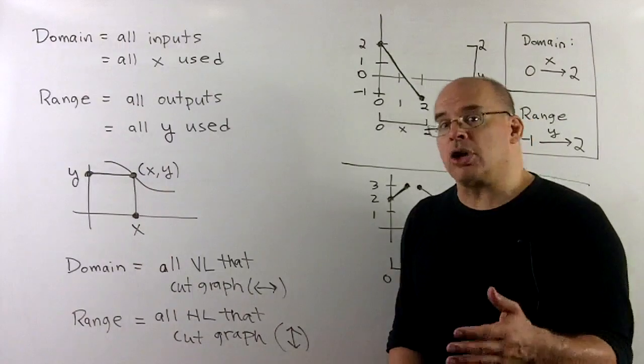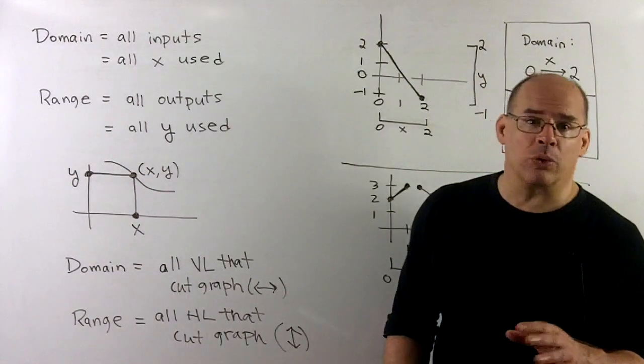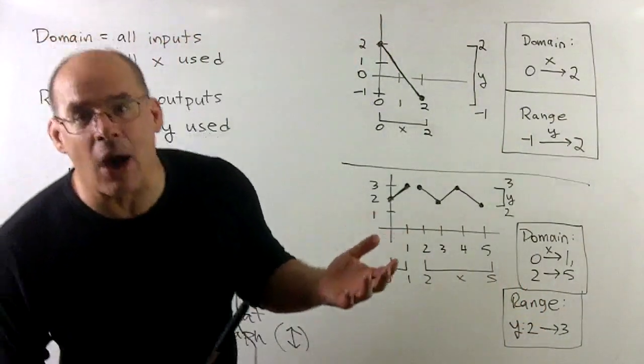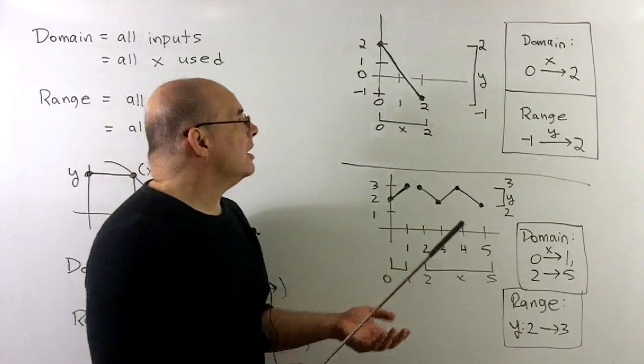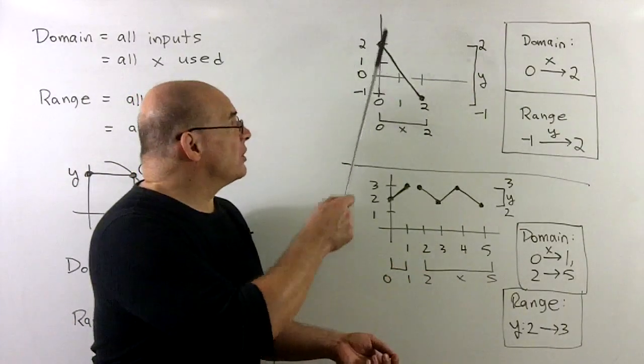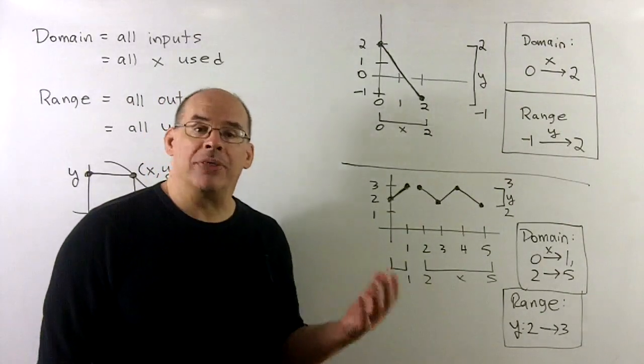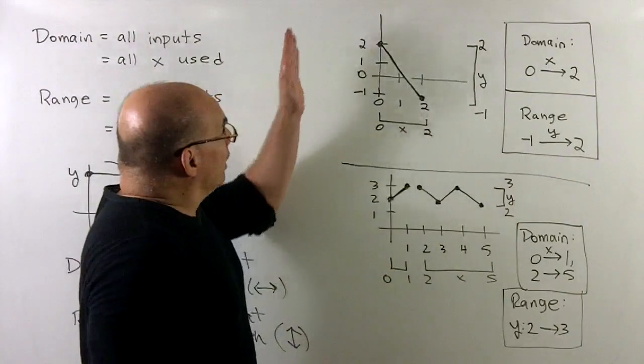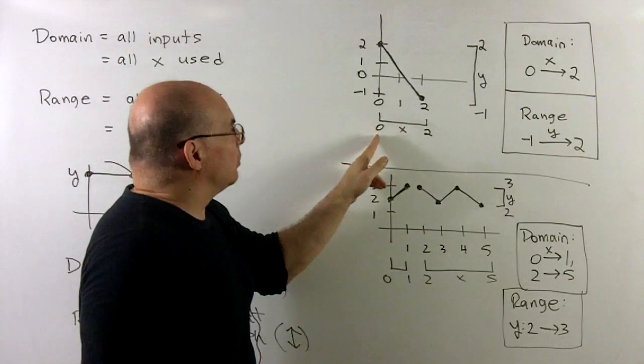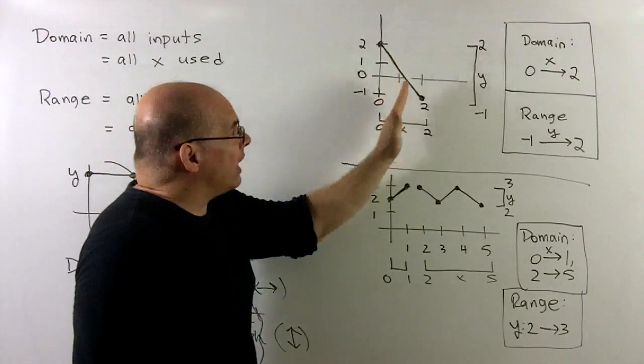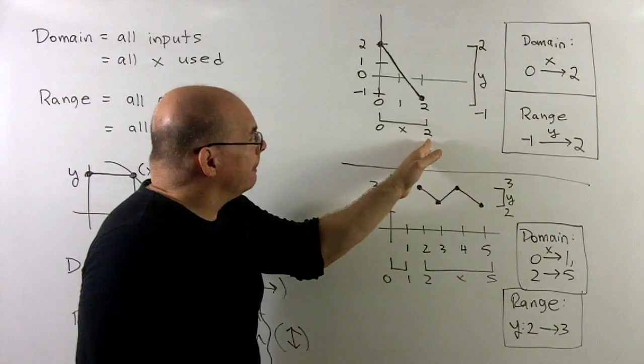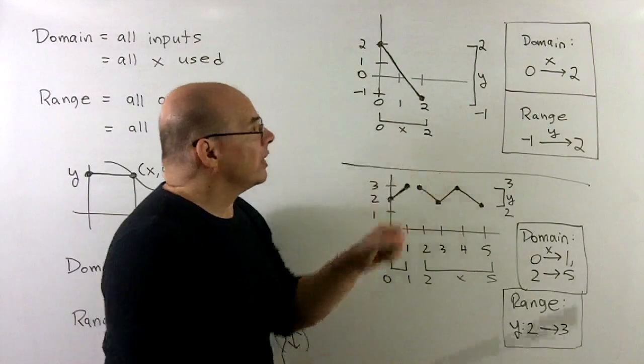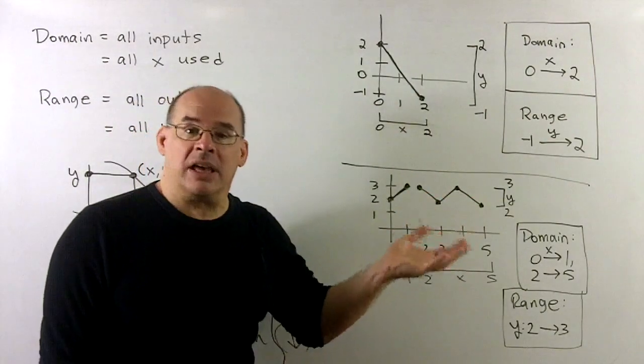That can give us a process for getting the domain and range from a graph. For the domain, we want to use all vertical lines that actually cut the graph. And then for the range, we'll use all horizontal lines. How do we implement this? Let's take this graph here. This passes the vertical line test, so it's definitely a function. If I want the domain, I want all x values that are used or all vertical lines that hit the graph. If I look at vertical lines, nothing actually happens until we get to x equal to 0. And then we're going to have all vertical lines hitting the graph until we get to the vertical line at 2. And then nothing past that. So the only x values that we actually use are between 0 and 2. That's our domain.